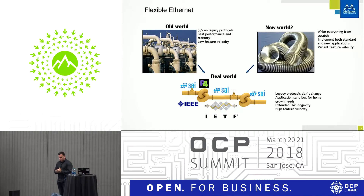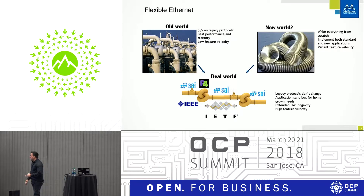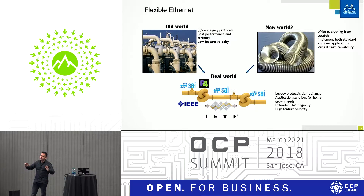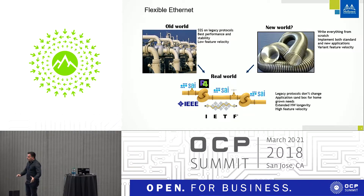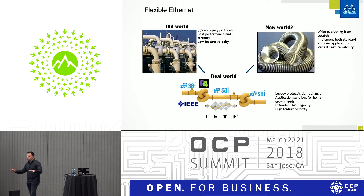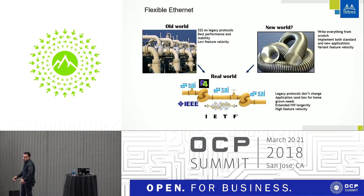Today what we're going to talk about is how can we add programmability. The main challenge here — looking at the left part — we're looking at the old world, which is like the SAI world, in which there is an existing fixed pipeline, fixed API. You have everything predefined, which is cool because it is uniform. All the silicon looks the same. So you as an application writer do not care whether you're working on a specific chip — you just want the functionality, which is cool.